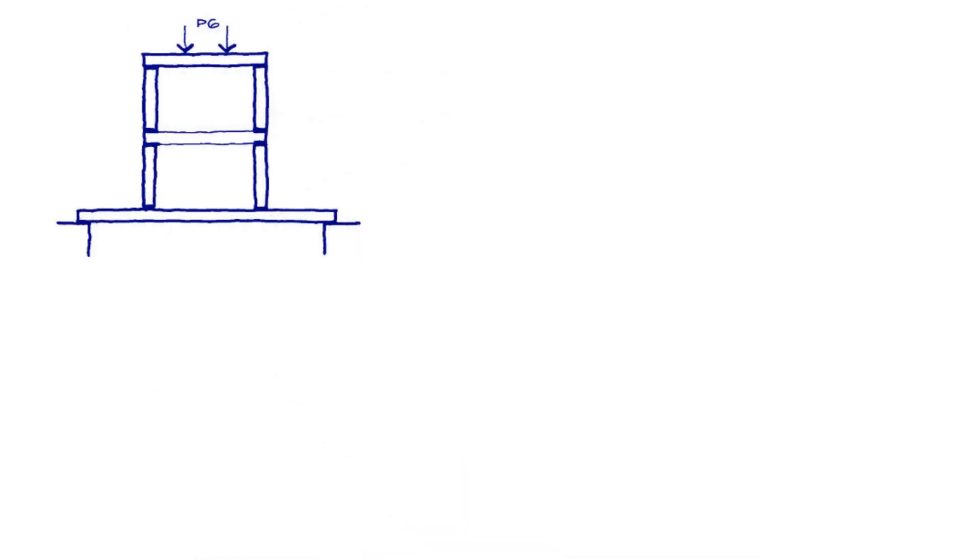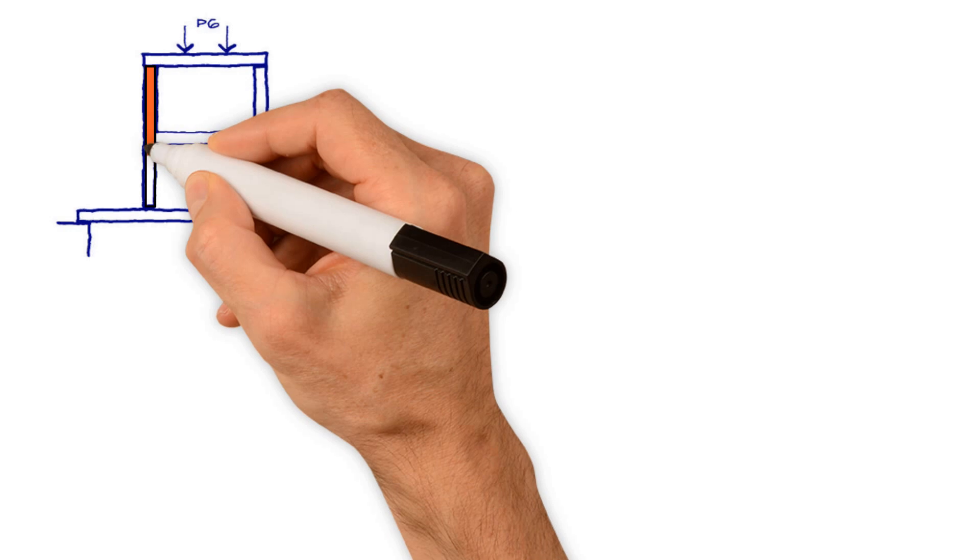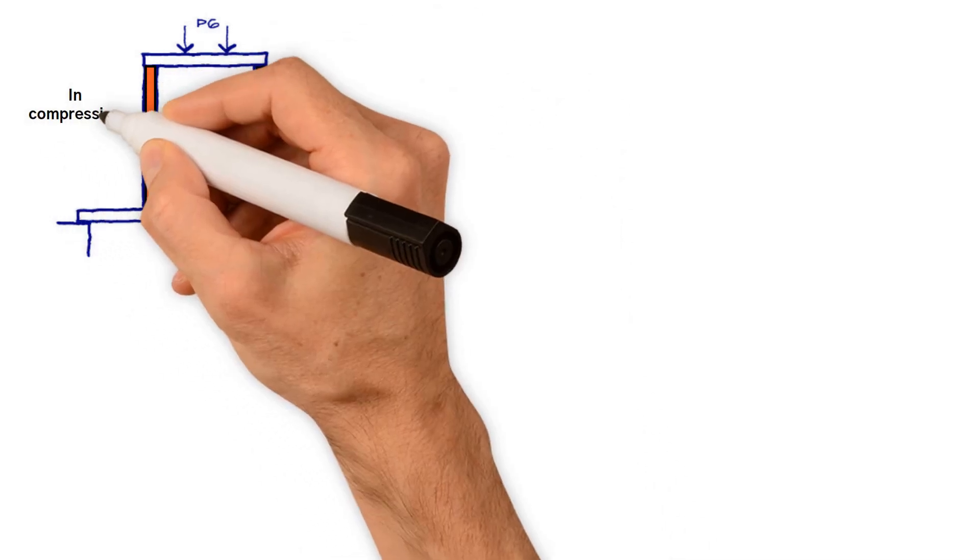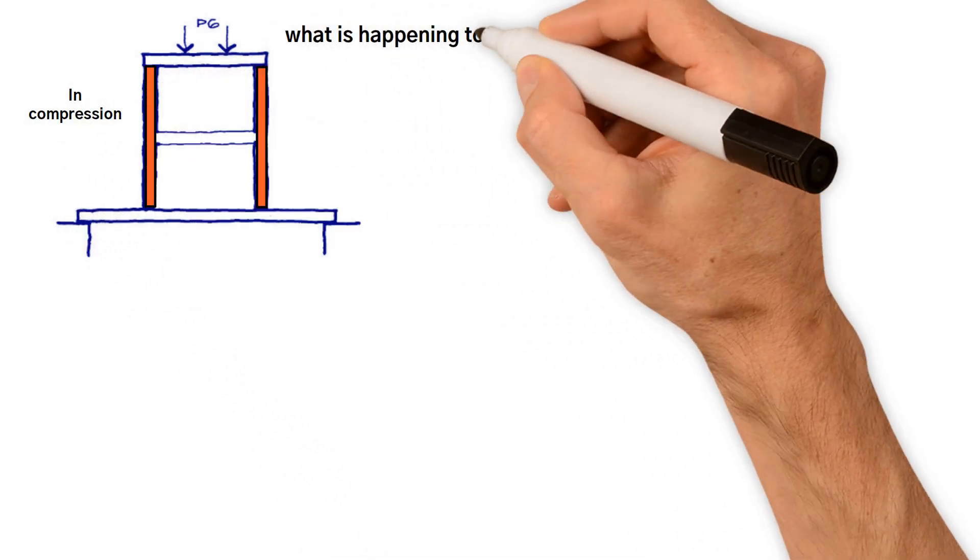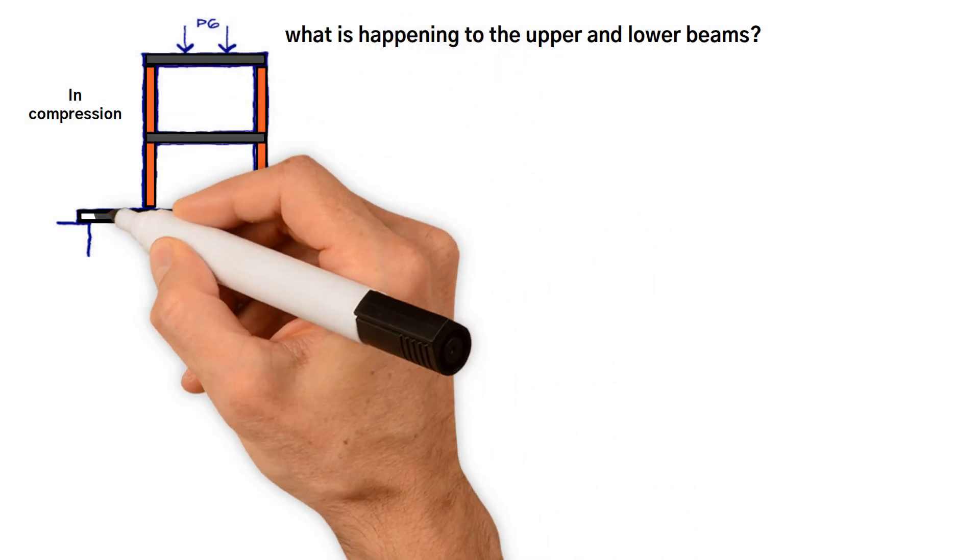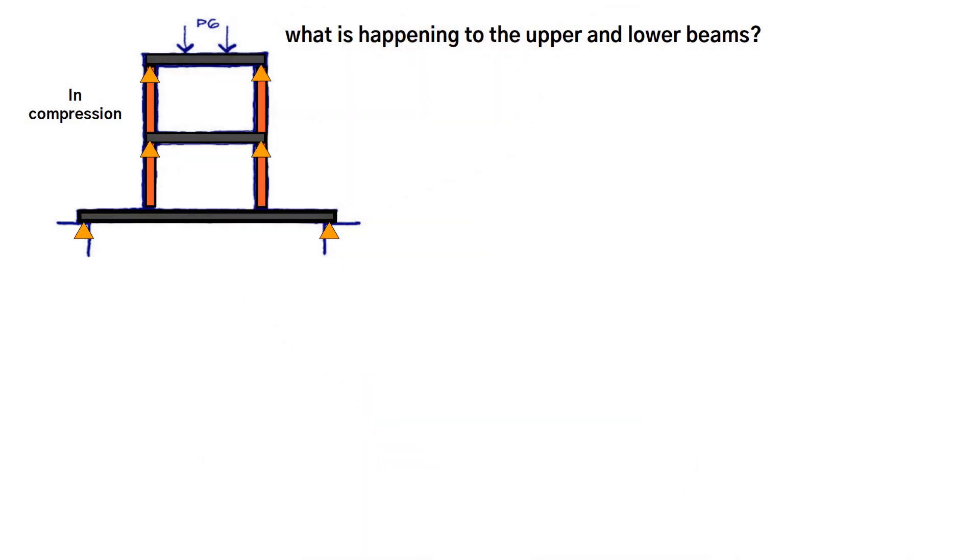Looking at the load path for load P6, the walls supporting the upper beam are in compression. But what is happening to the upper and lower beams? These beams are transferring the loads to the supports by a combination of bending moments and shear forces.